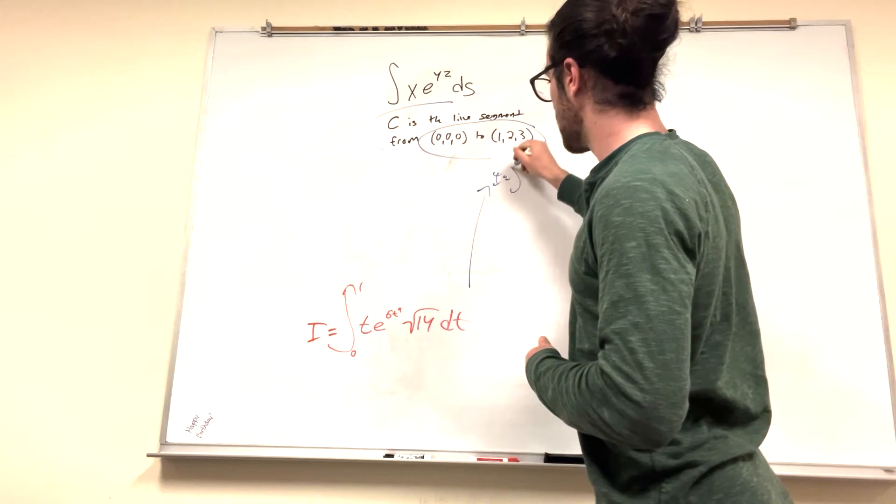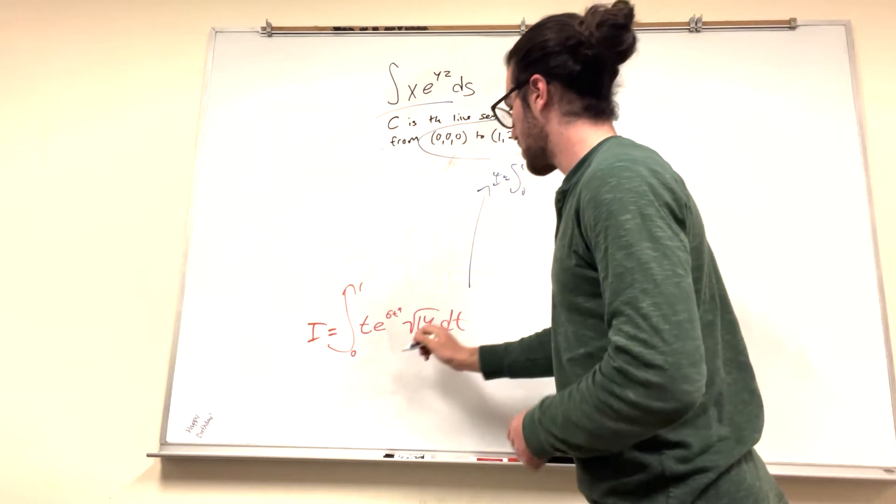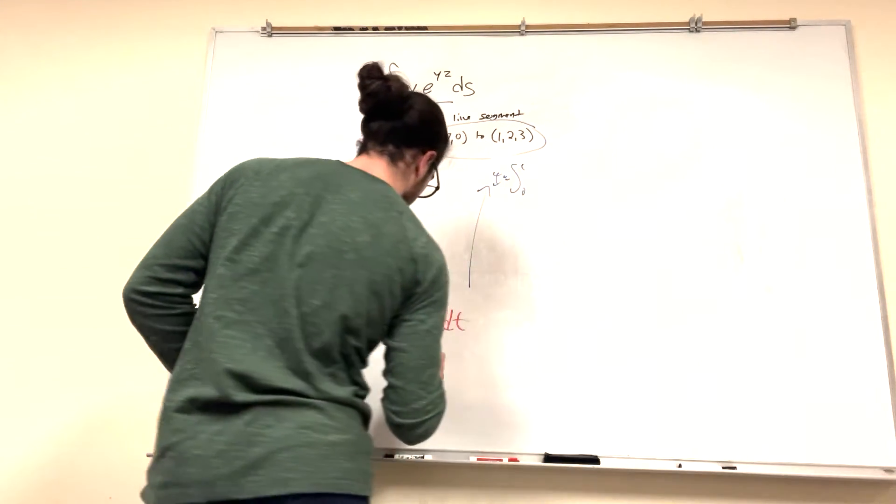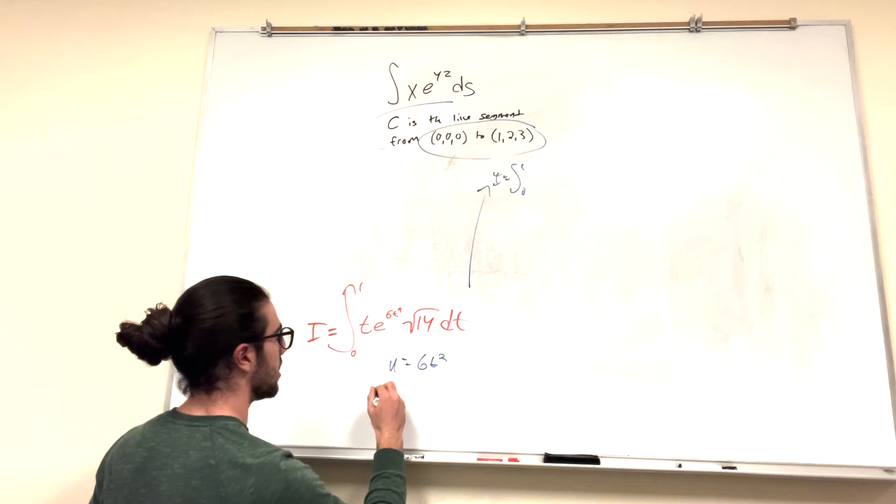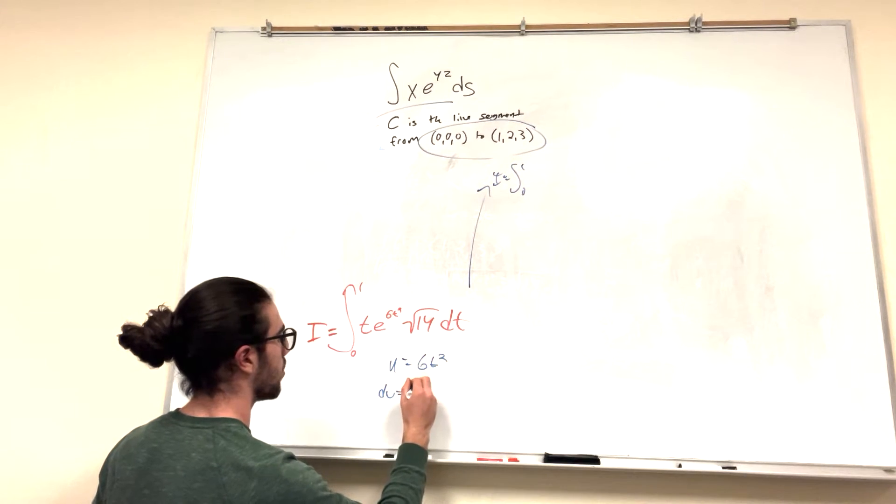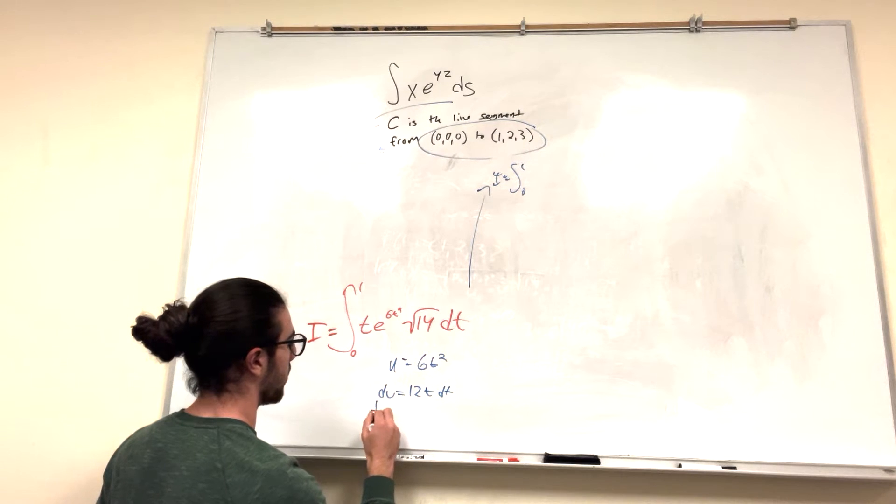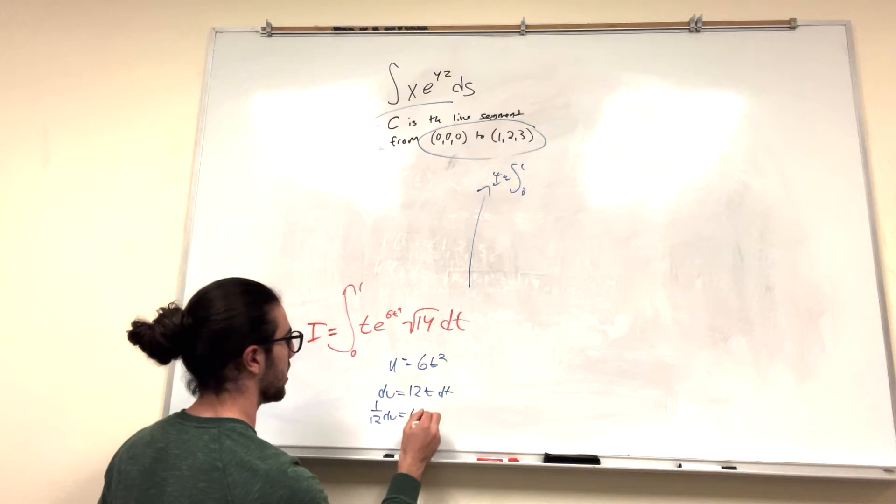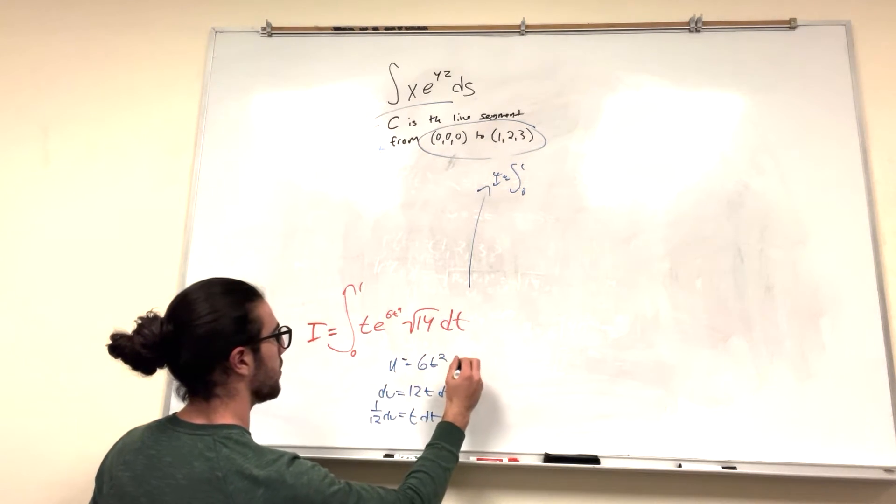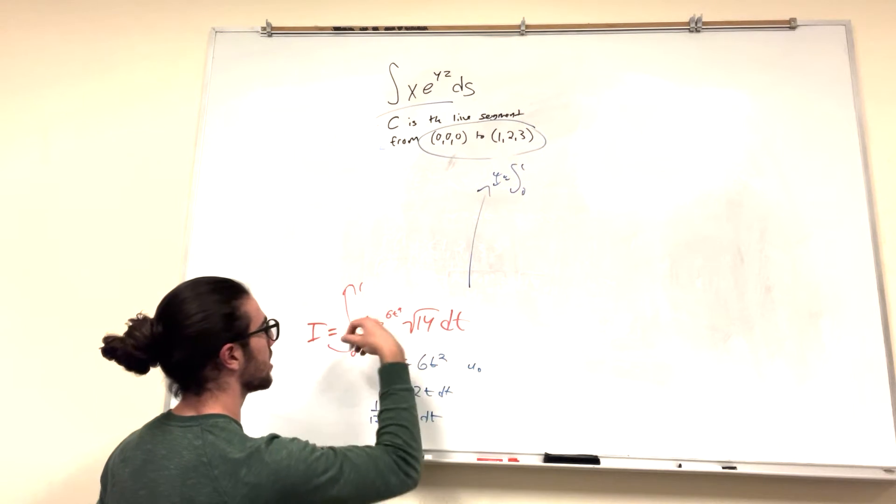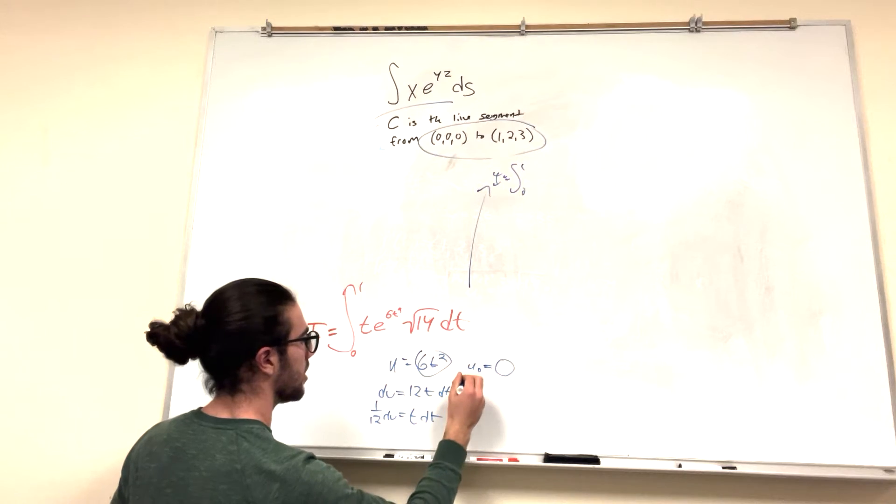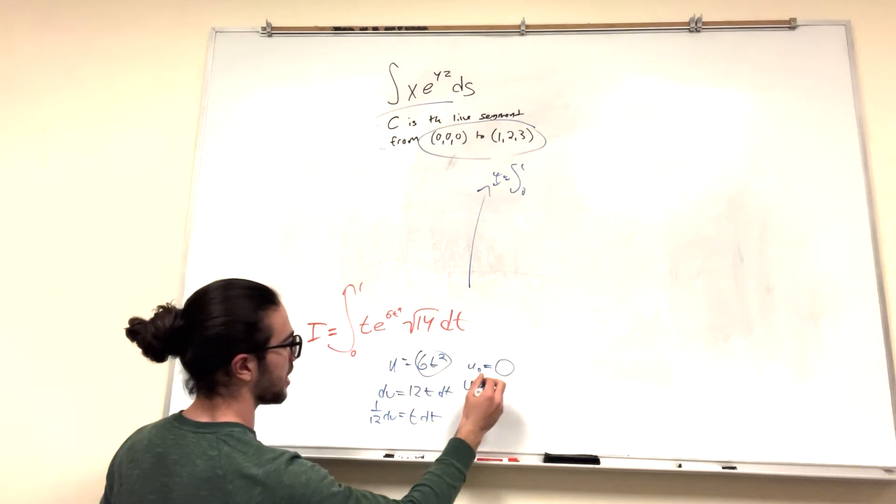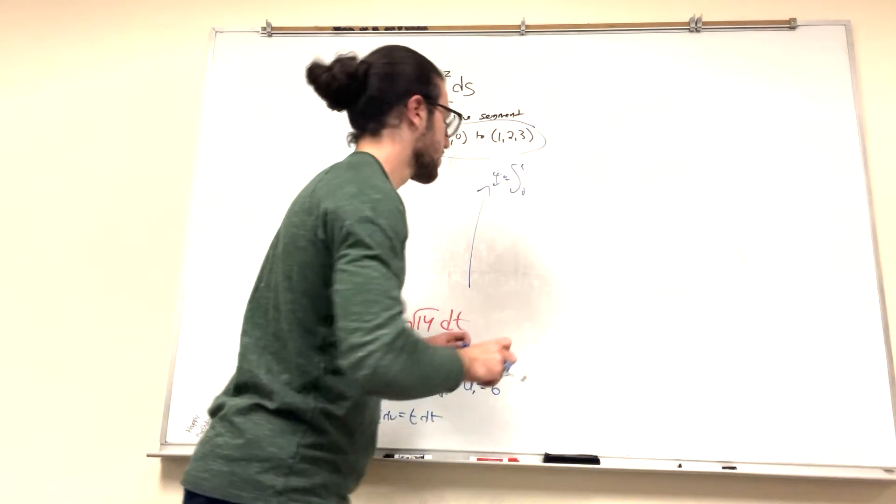I is equal to 0 to 1. Let's do u sub. u is equal to 6t squared. du is equal to 12t dt. Or 1 over 12 du is equal to t dt. u of 0, because we're doing our bounds. 0, plug it into this, gives you 0. u of 1, plug it into this, you get 6. Perfect.